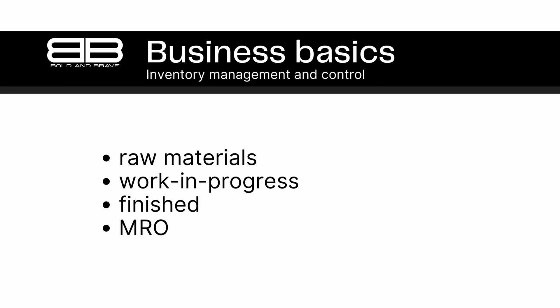Work-in-progress inventory is another type of inventory that businesses need to manage. This refers to goods that are in the process of being manufactured but are not yet finished. Managing work-in-progress inventory involves tracking the status of each item and ensuring that it is being processed in a timely and efficient manner.